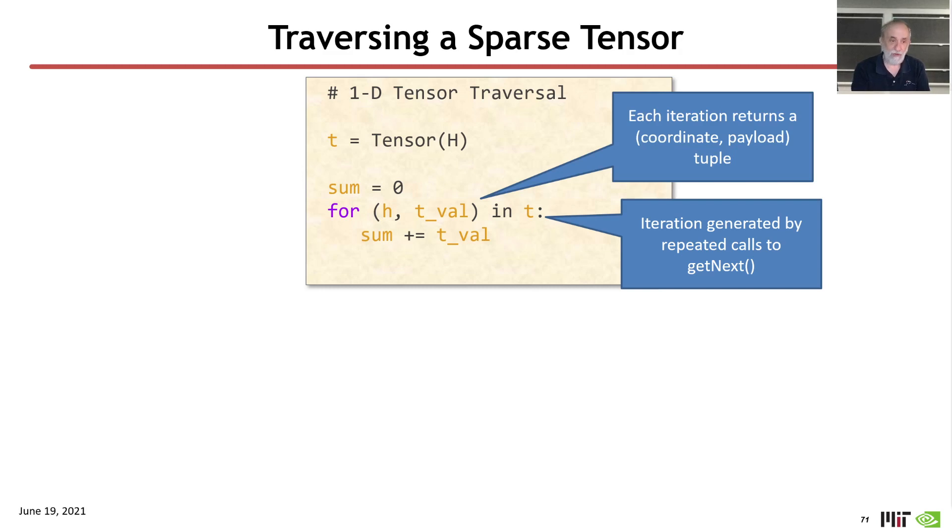and so in this computation, I actually don't care about the coordinate, but I do care about the value, and so we're going to use a similar convention to what we use before. The coordinate is like the index that we used to use for accessing data in uncompressed, dense data structures, and why was that sensible?